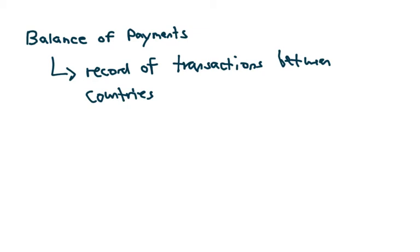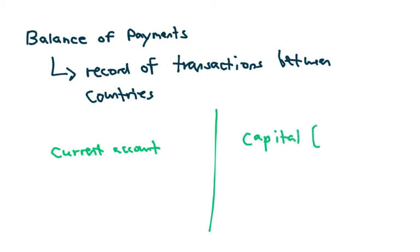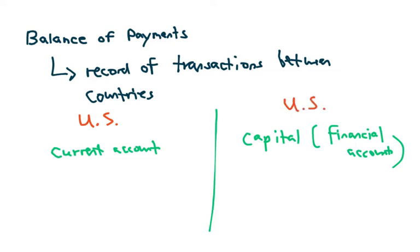These transactions get recorded in one of two accounts. You have the current account and you have the capital account — sometimes called the financial account. We're going to look at this from the US's perspective: the US current account and the US capital account. We can do this for any country.